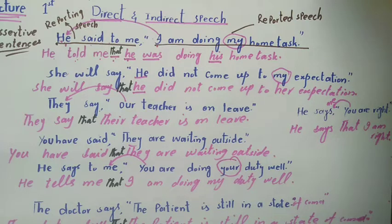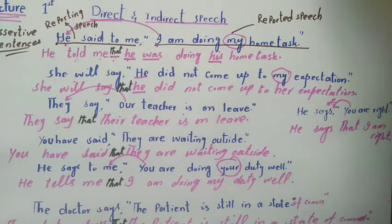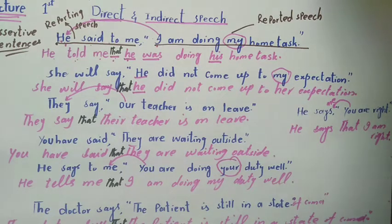Now let's convert into assertive sentences. We have some examples written in practice. First example: 'He said to me, I am drawing my home task.' Here 'He said to me' is the reporting speech and 'I am drawing my home task' is the reported speech. This is a direct sentence because it has two parts.